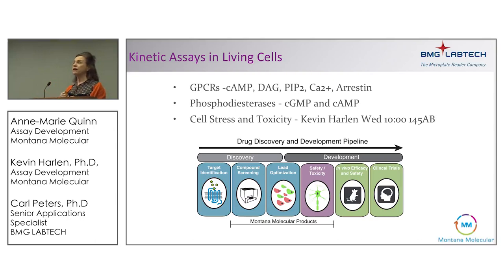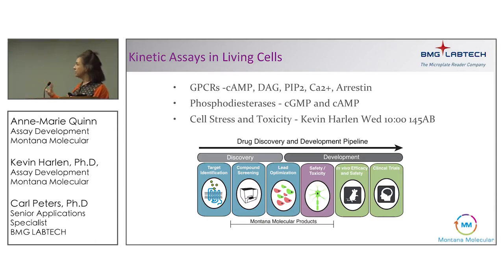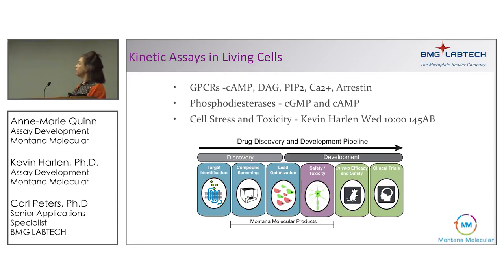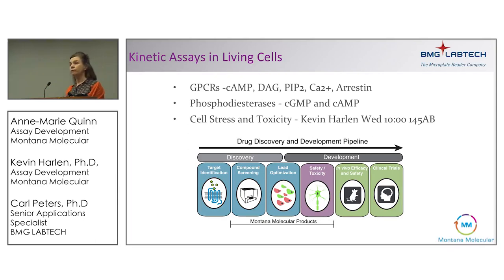In the realm of phosphodiesterases, for example, you can combine a cyclic AMP assay in green with a cyclic GMP assay in red to determine the selectivity of your phosphodiesterase. We've also recently expanded into safety tox — assays for cell stress that are reversible. My colleague Kevin Harlan will be giving a talk tomorrow at 10 o'clock in room 145 if you're interested in cell toxicity.